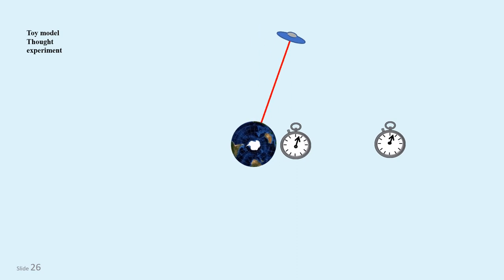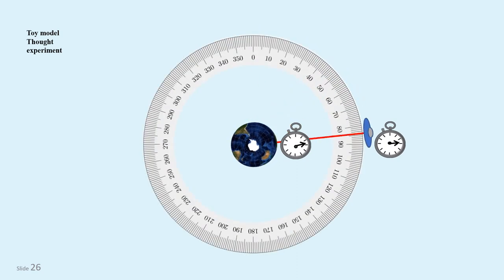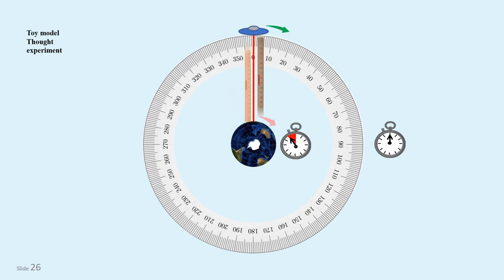So far we have negated the need for dark energy, but we can also resolve the dark matter with the same parameter. To an Earth observer, the space station is further away and rotating about the Earth faster. To an observer on the space station, the Earth is closer and rotating slower.